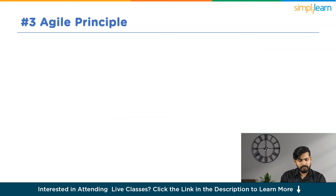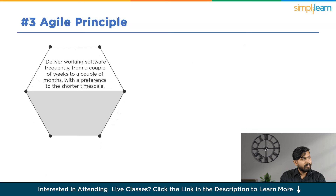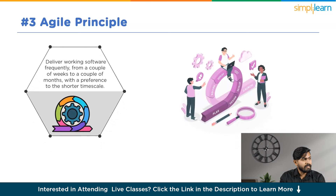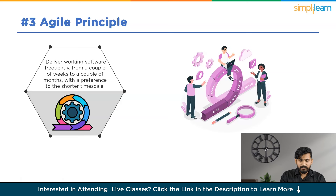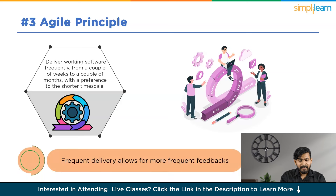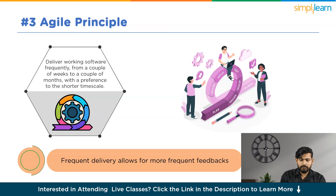Now let's discuss our third Agile Principle: deliver working software frequently, from a couple of weeks to a couple of months, with a preference for the shorter timescale. The Agile methodology, characterized by short-term development cycles, focuses on smaller portions of the product, in contrast with the extensive documentation typically associated with waterfall product development.